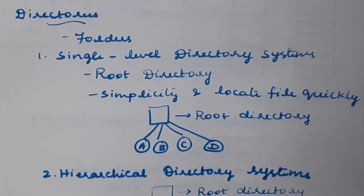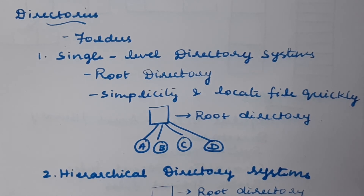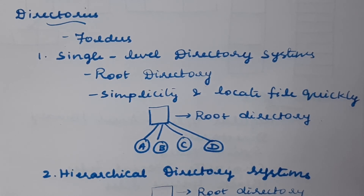Next, we discuss directories, which are closely related to the file system — directories are where we keep all files, and are also called folders. Directories can be structured in different ways. One is the single-level directory system, which means there is only one directory containing many files. This single directory is called the root directory, and was used in earlier operating systems.